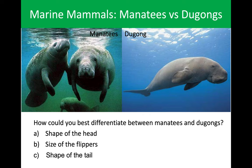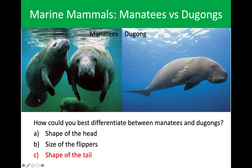Now moving on to manatees and dugongs. These guys are kind of difficult to place. If you just looked at them at a glance, you would almost assume they were the same thing. Our options to differentiate between the two are the shape of the head, the size of the flippers, or the shape of the tail. The heads kind of both look like a droopy dog, and the flippers are the same. But if you look at the tail, the dugong has a tail that's more like a dolphin or a whale, while the manatee's tail is more like a beaver paddle. That's definitely the way to tell the difference between the two.